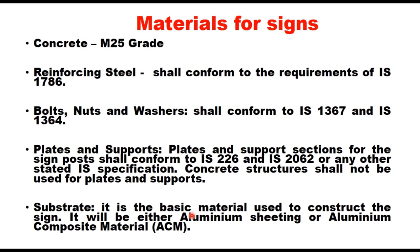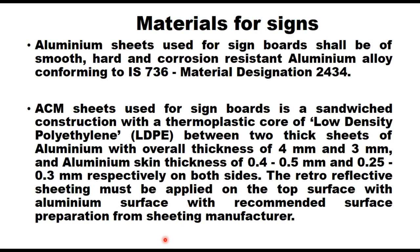The substrate is the basic material used to construct the sign. It will be either aluminum sheet or aluminum composite materials. Aluminum sheets used for sign boards shall be smooth, hard and corrosion resistant aluminum alloy conforming to IS 736. Aluminum composite material sheets used for sign boards are a sandwiched construction with a thermoplastic core of low density polyethylene (LDPE) between two thick sheets of aluminum, with overall thickness of 4 mm and 3 mm, and aluminum skin thickness of 0.5 mm and 0.25 to 0.3 mm respectively on both sides.